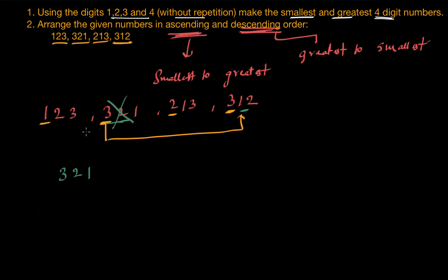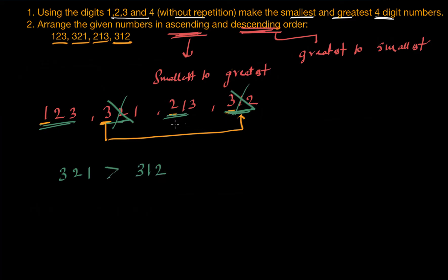Now 321 is removed. Comparing the remaining numbers 123, 213, and 312 at the 100s place: 1, 2, and 3 respectively. The largest is 3, so 312 is the next greatest. That leaves us with 123 and 213.